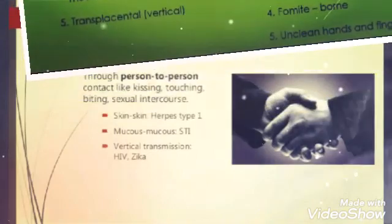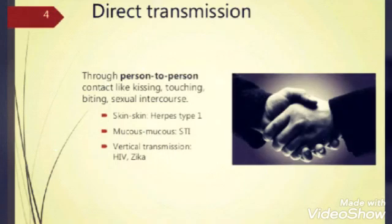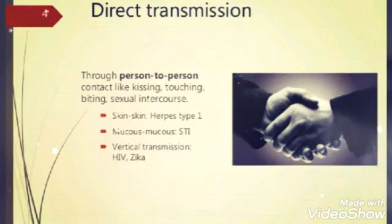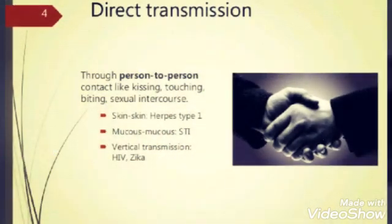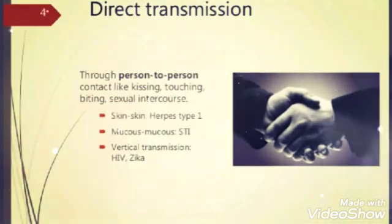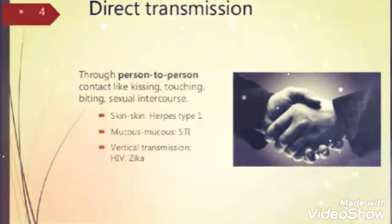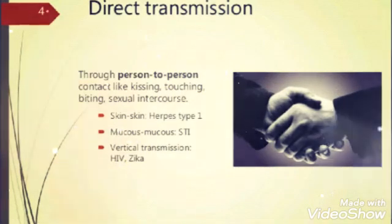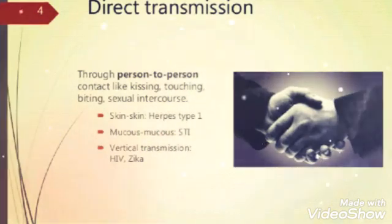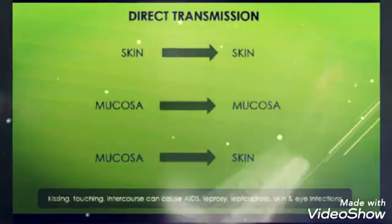In direct transmission, first is person-to-person contact like touching, biting, or sexual intercourse — skin to skin. Whenever there is a skin infection on any human being and we get contact with that person, it is very easy for bacteria and viruses to transfer from their skin to another person's skin. This is direct contact or direct transmission, which includes skin to skin, mucosa to mucosa, and mucosa to skin.